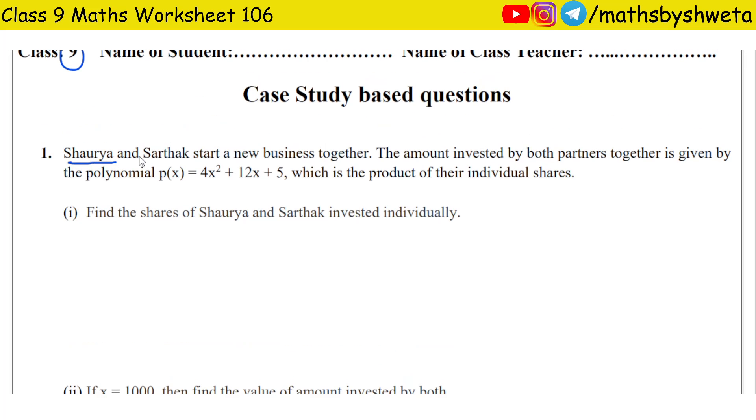What does it say? Shourya and Sarthak start a new business together. The amount invested by both partners together is given by the polynomial p(x) = 4x² + 12x + 5, which is the product of their individual shares. So here are 2 people, Shourya and Sarthak. Both have started a new business. Both have the amount invested in polynomial form. Now, find the shares of Shourya and Sarthak invested individually.